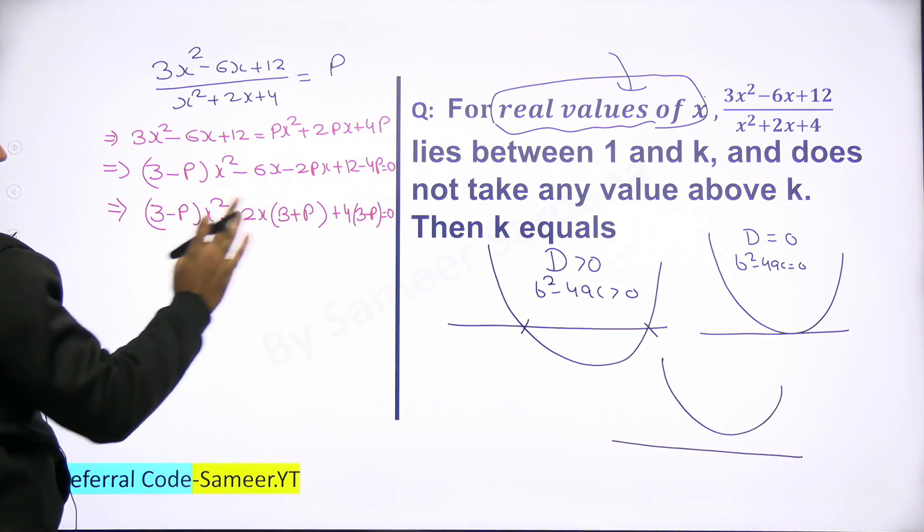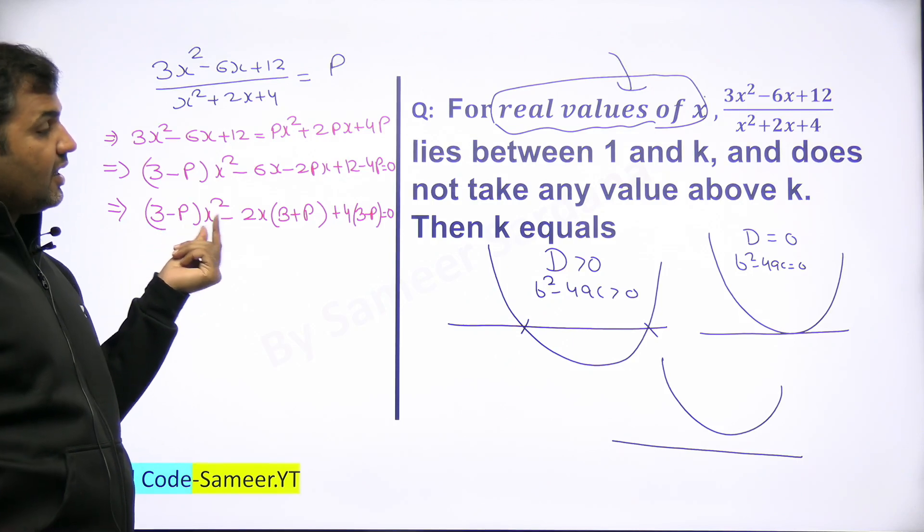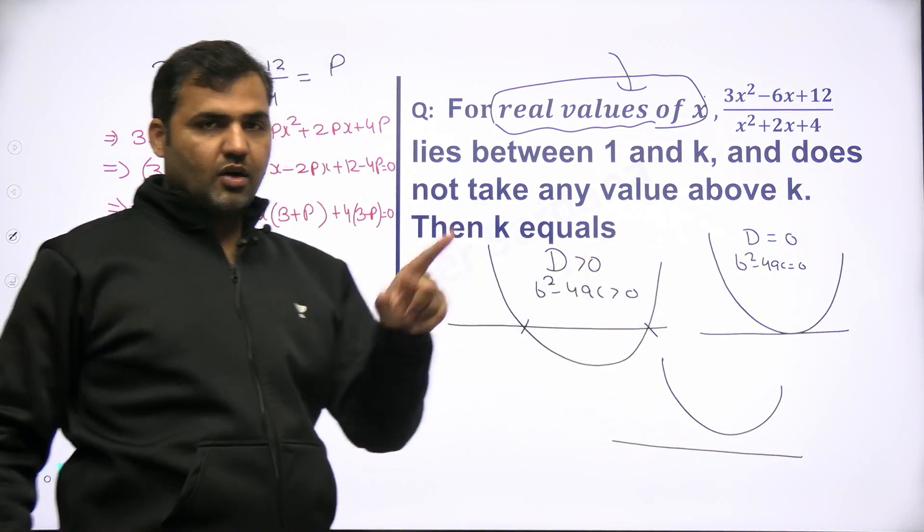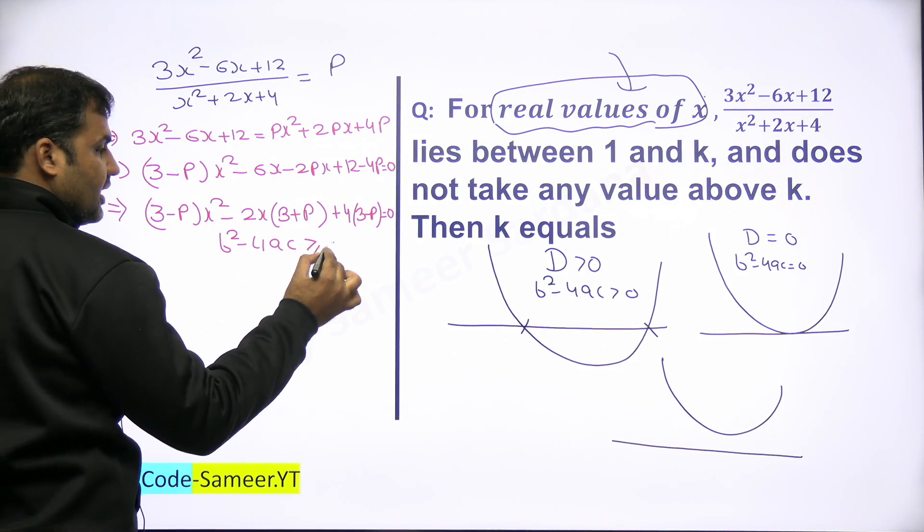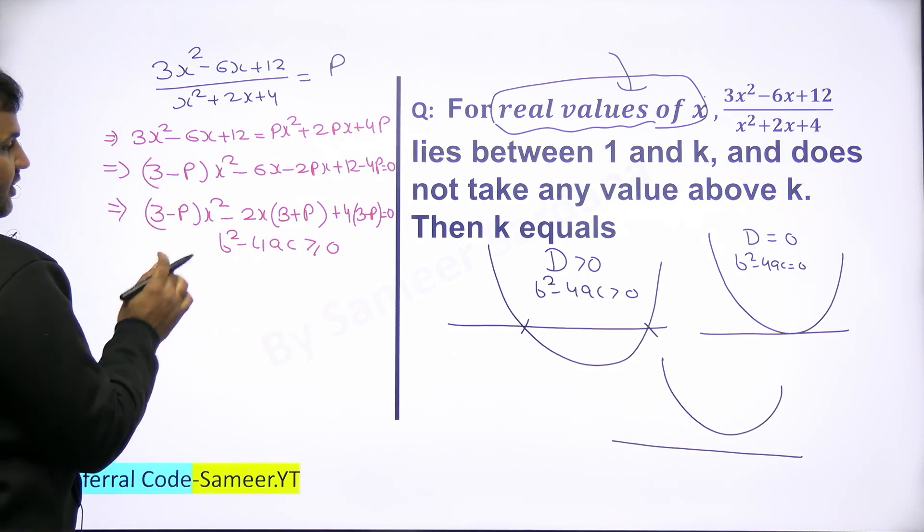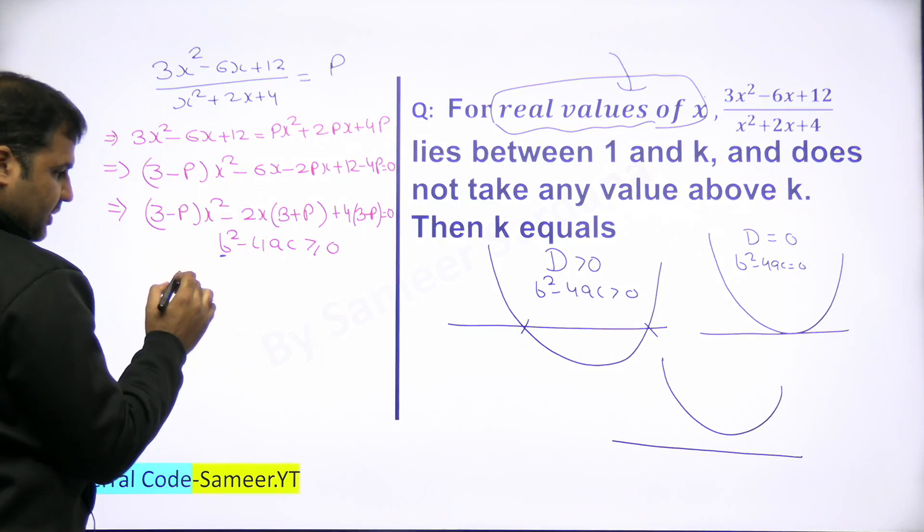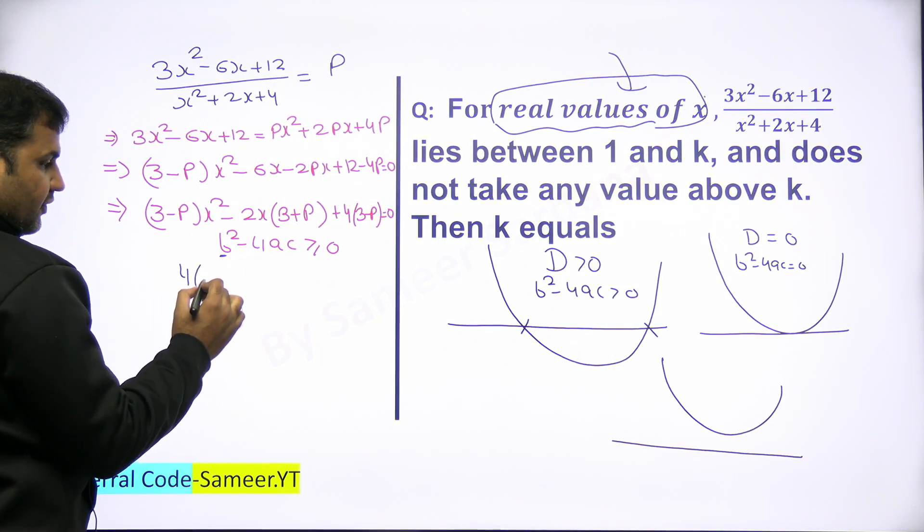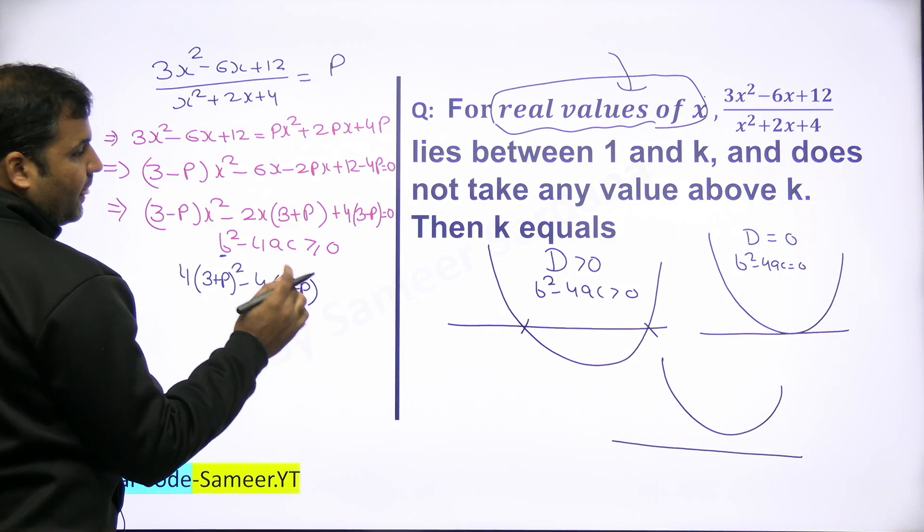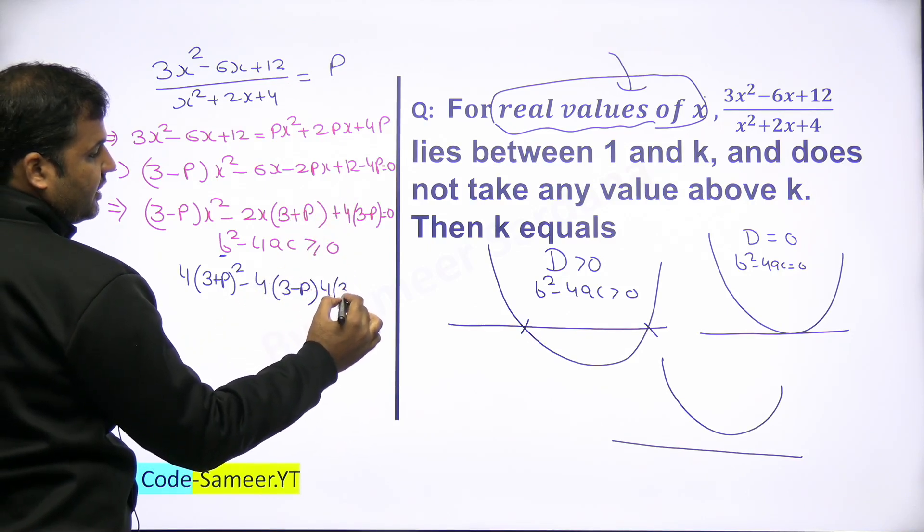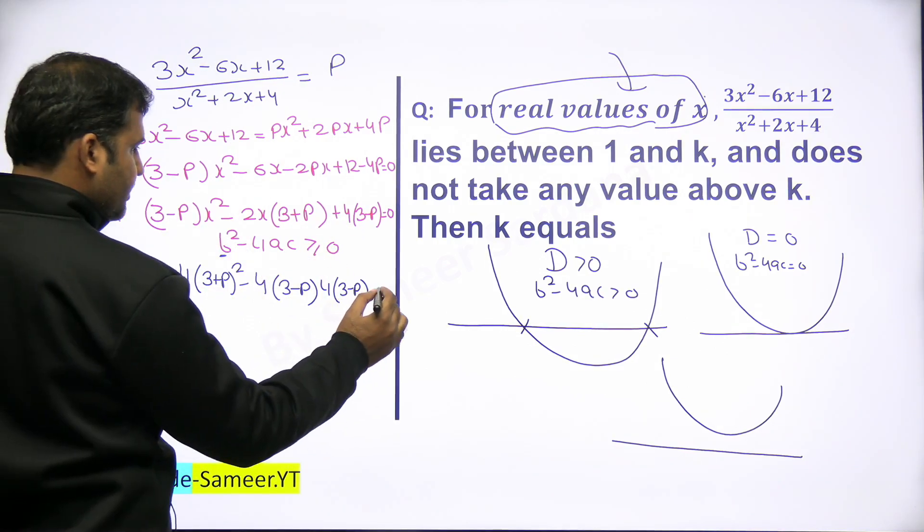Now this is (3-p)x² - 2x(3 + 3p) plus 4(3-p) = 0. Now, discriminant, this is a quadratic equation in terms of x². Whether it's an upward parabola or downward parabola depends on whether coefficient of x² is positive or negative. But for real x, discriminant will definitely be greater than or equal to 0. Now if I apply this condition that discriminant, b² - 4ac should be either greater than or equal to 0. Just simply put the values of coefficient. b is coefficient of x, which is 2(3+p) in this case.